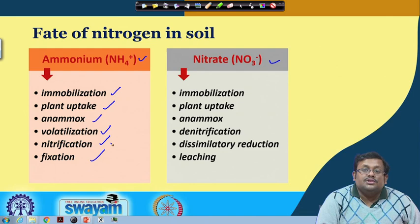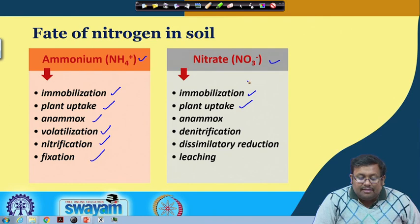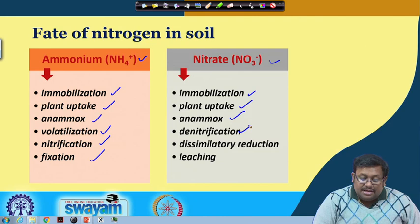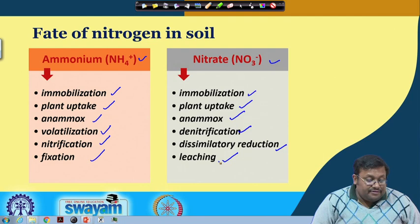In case of nitrate, the fates are: immobilization (conversion of nitrate to organic form), plant uptake — plants love this form, anammox (discussed later), denitrification (conversion of nitrate to atmospheric or gaseous nitrogen under anaerobic conditions), dissimilatory nitrate reduction, and finally leaching — removal of nitrate through water downward through the soil profile. These give a snapshot of the different fates of the two available forms of nitrogen.